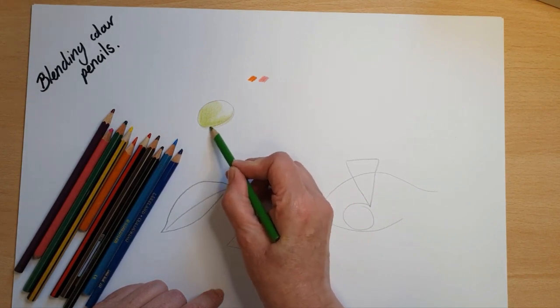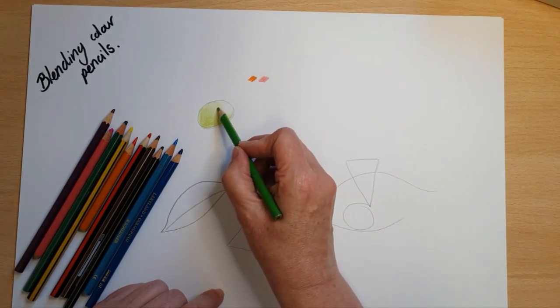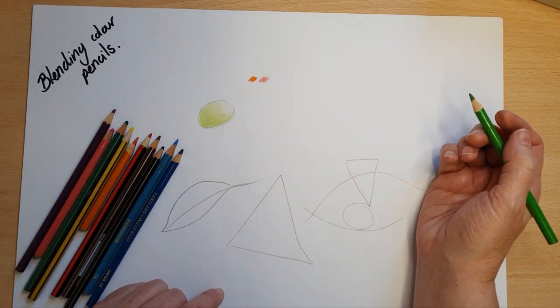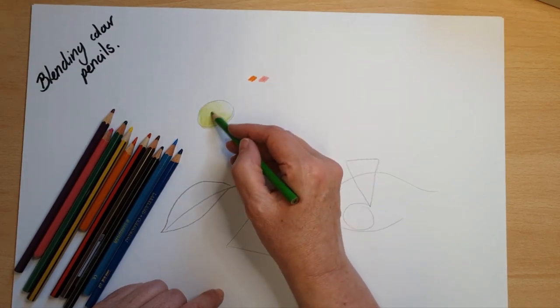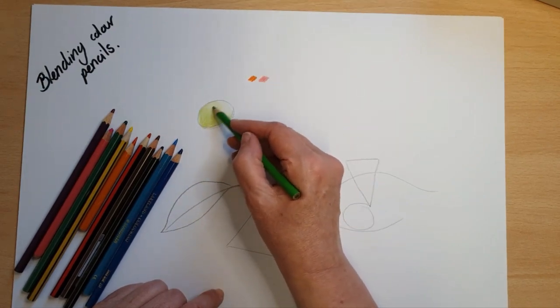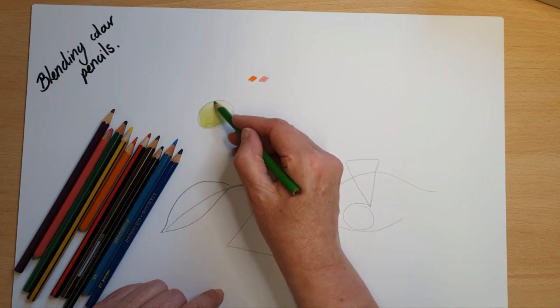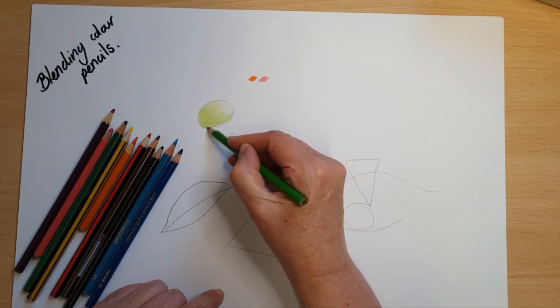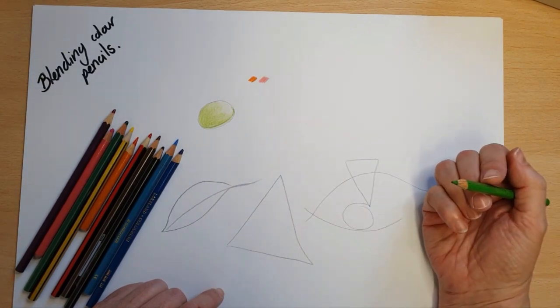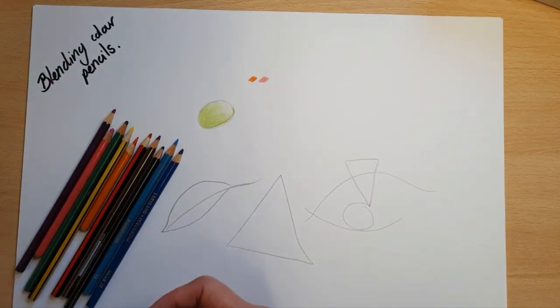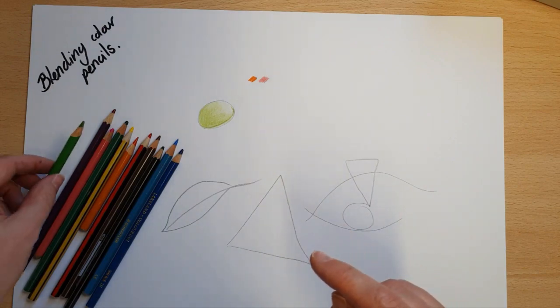So pencil quite on the side, gently back and forth quickly. I'm not pressing hard, I'm just letting that color gently rub off onto the paper and you can get a really nice soft tone like that. Okay, so let's think how I could blend colors.